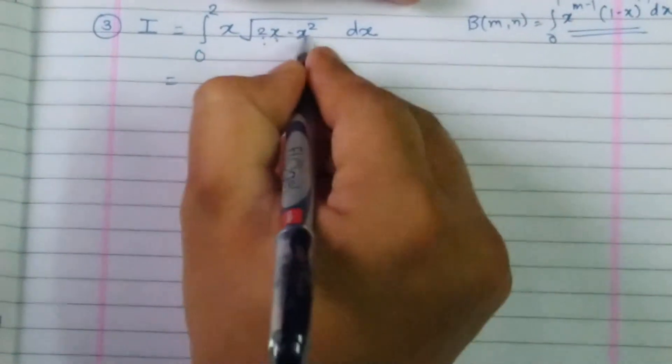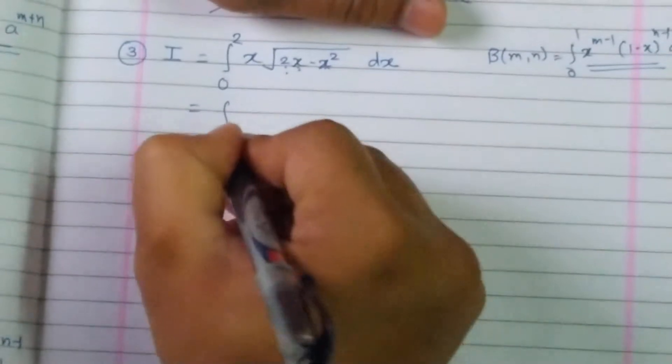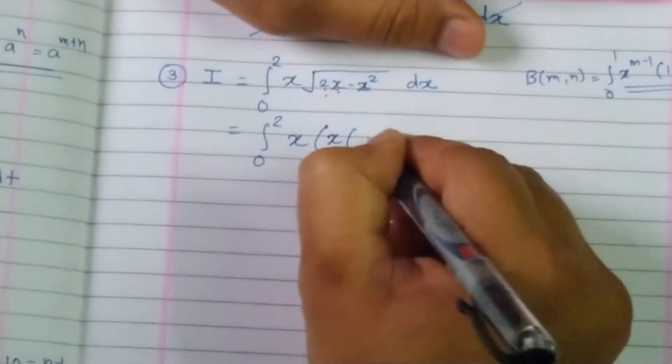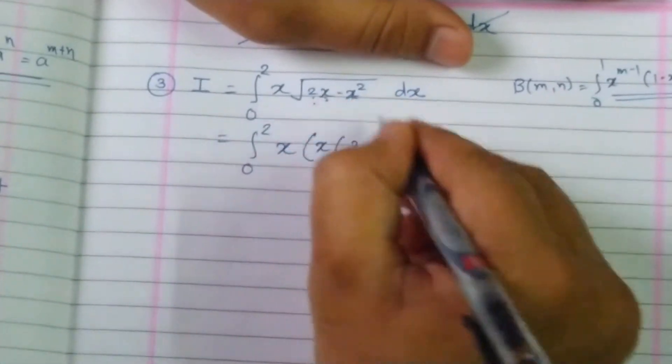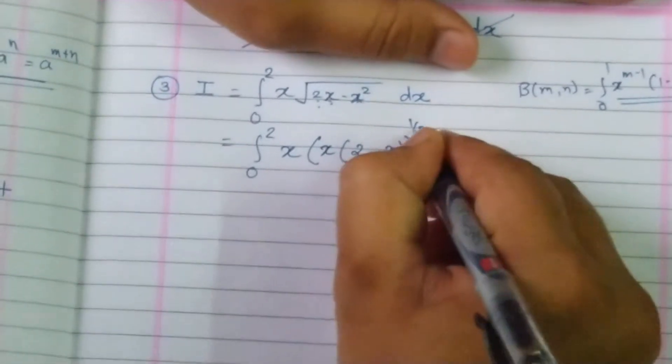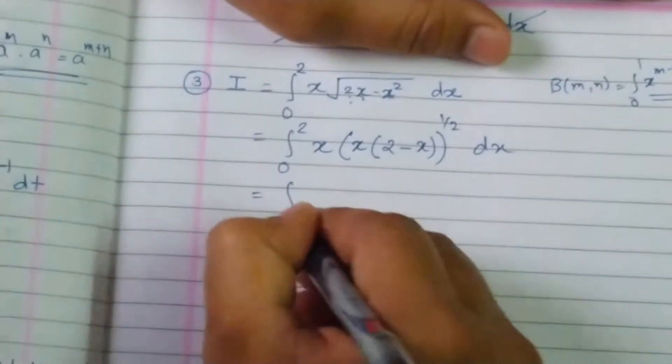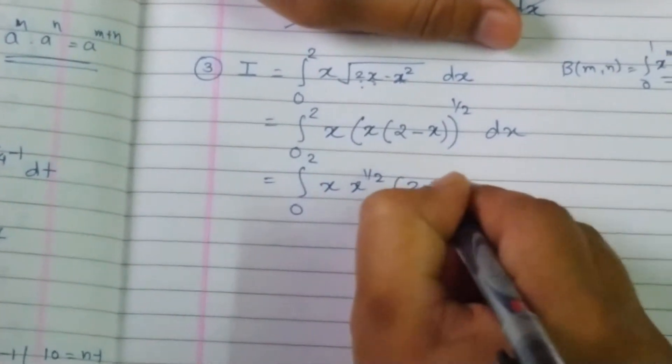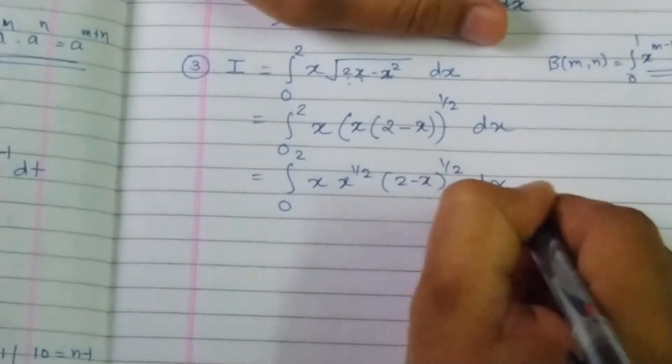First of all I will take x common from this square root. Integration from 0 to 2, x. I am taking x common. 2 minus x square becomes x only, raise to 1 by 2, dx. Square root means 1 by 2. So I am getting integration from 0 to 2, x into x raise to 1 by 2, into 2 minus x raise to 1 by 2, dx.